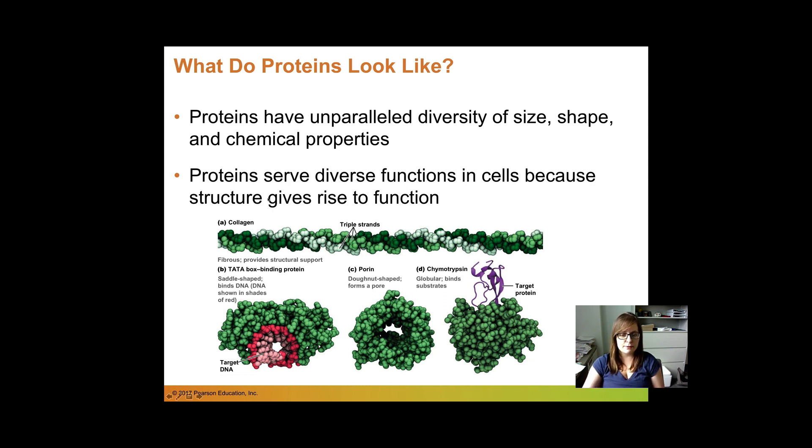Here's just some examples of different shaped proteins. We have collagen that kind of winds around each other in strands to create this fibrous protein. We have this TATA binding box protein that has a spot for it to bind DNA because this protein binds DNA.